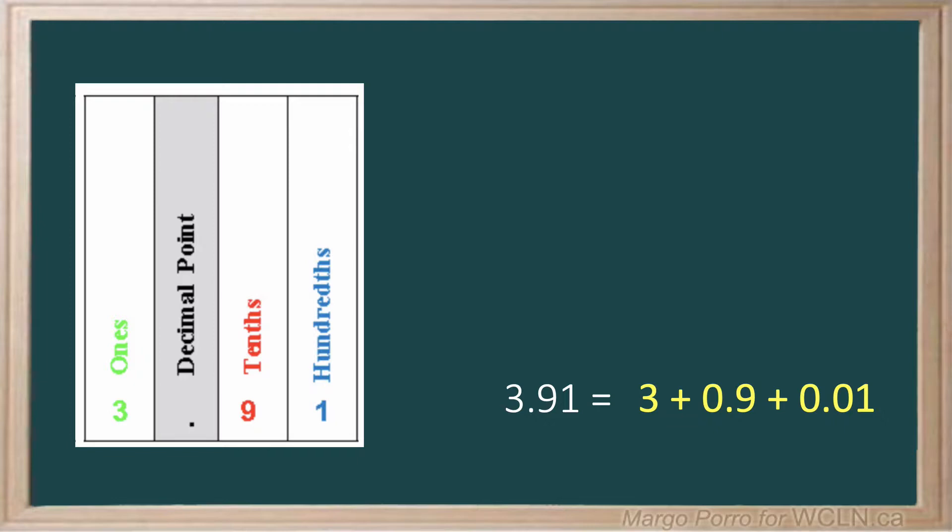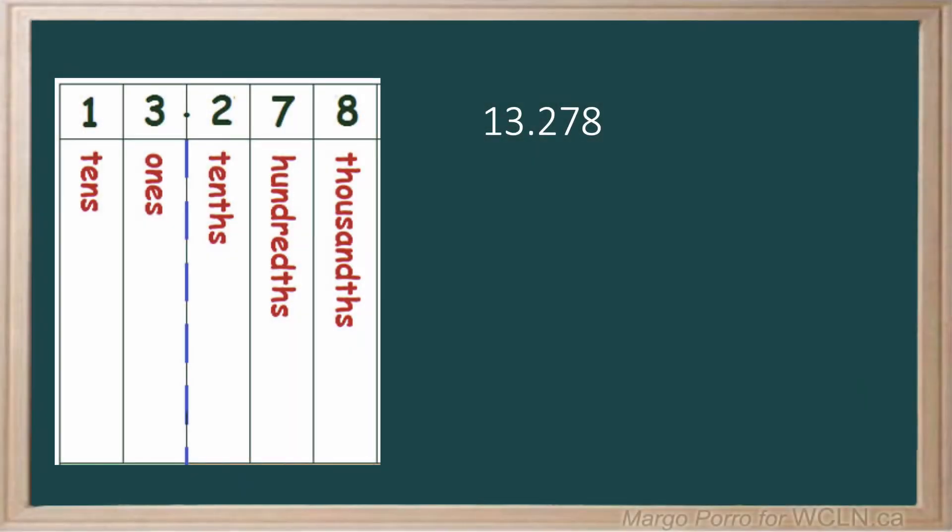Let's look at another example. This number has 2 digits before the decimal, the 13, and 3 digits after the decimal, 278 thousandths.